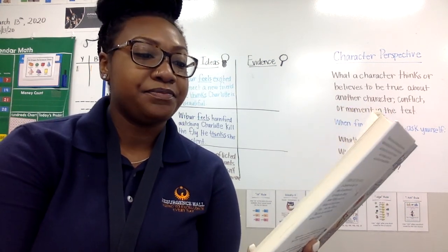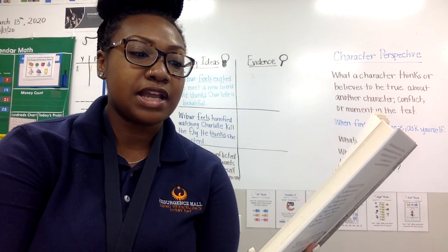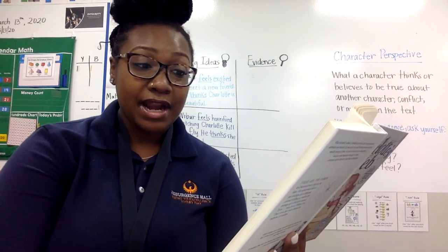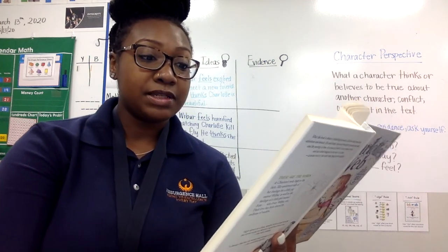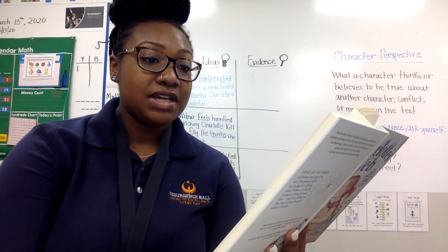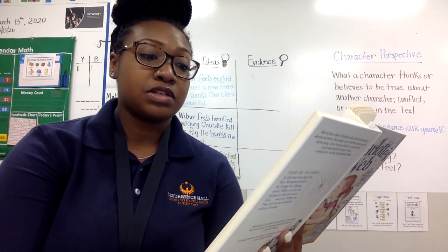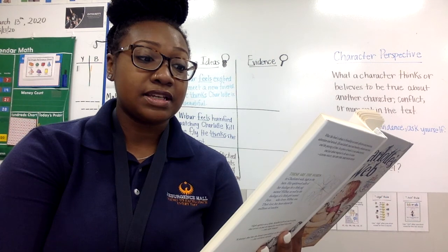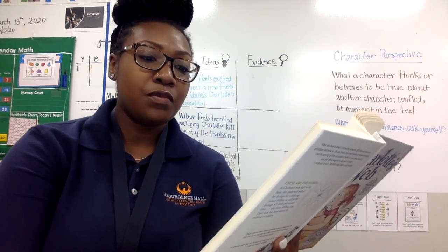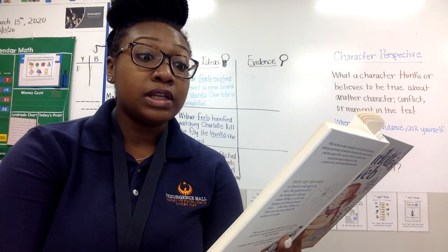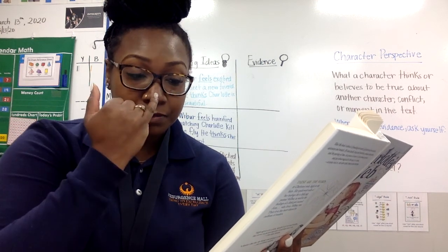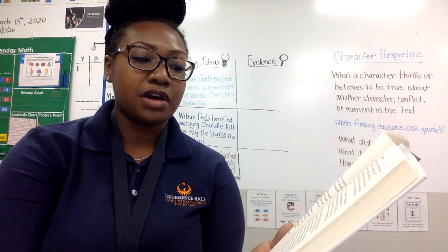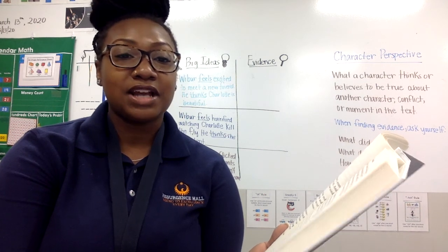Wilbur yawned and went back to sleep. In his dreams, he heard again the voice saying, 'I'll be a friend to you. Go to sleep. You'll see me in the morning.' About a half an hour before dawn, Wilbur woke up and listened. The barn was dark. The sheep lay motionless. Even the Goose was quiet. Overhead, on the main floor, nothing stirred. The cows were resting. The horses dozed. Templeton had quit work and gone off somewhere on an errand. The only sound was a light scraping noise from the rooftop, where the weather vane swung back and forth. Wilbur loved the barn when it was like this, calm and quiet, waiting for light.